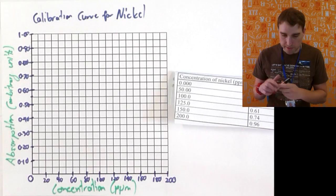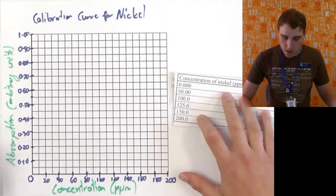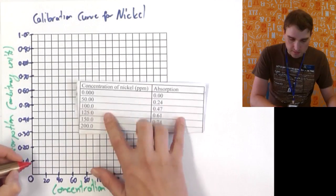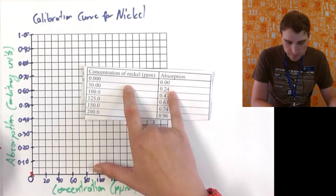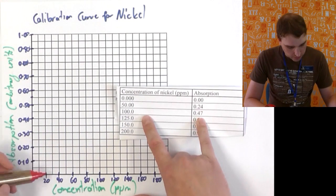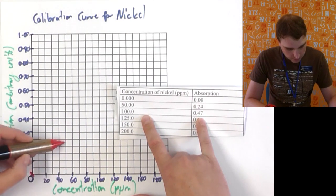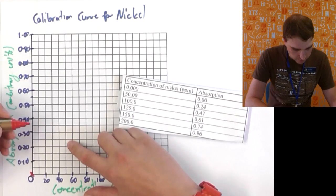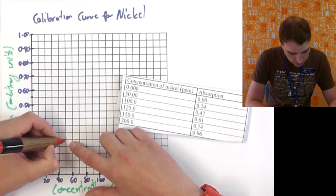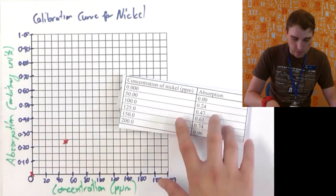Next step I'm going to put my points on. So I'm going to start at 0, 0 because that's my first piece of data. So 0, 0. Next is 50, 0.24, so 50 down here, 0.24 up here, so 50, 0.24. So just below half, so around about there.